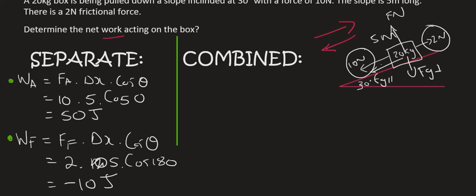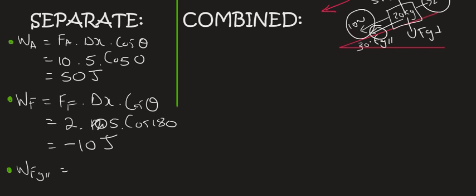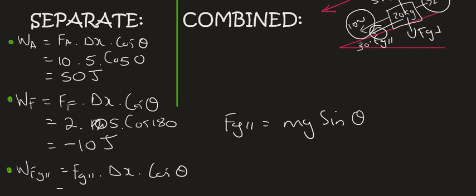And then the last one we need to look at is Fg parallel. Now remember in the previous lesson we said that the force of parallel is equal to mg sin theta. So we need the force, Fg parallel. We need the distance once again. And we need the cos of theta. So that's going to be equal to the mass which is 20 times g which is 9.8 times the sin of the angle of the slope which is 30 times the distance of the slope which is 5 and then cos theta.